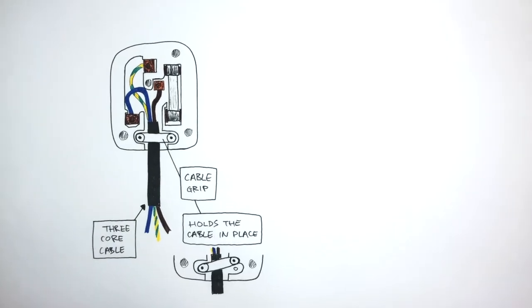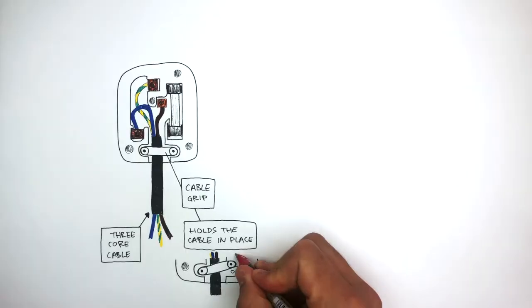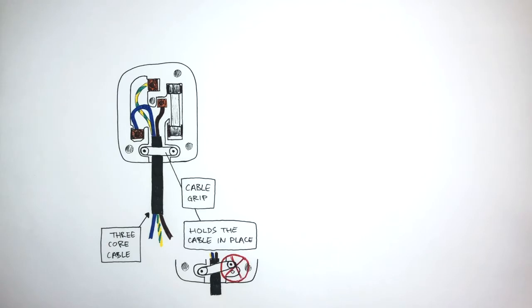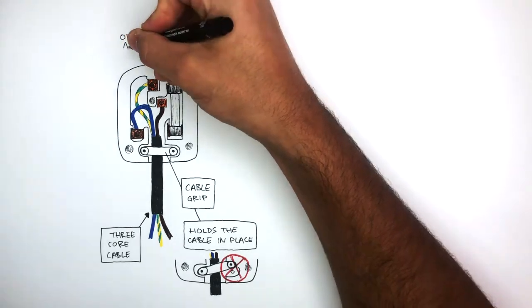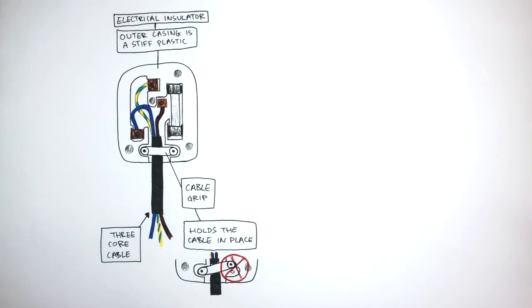If we zoom in on this diagram we can see how the cable grip has come loose. This is not good for the safety of this three pin plug as the three core cable can then potentially slip out of place. The outer casing is a stiff plastic which is a good electrical insulator and stops people from getting an electric shock, making the three pin plug safe to handle.